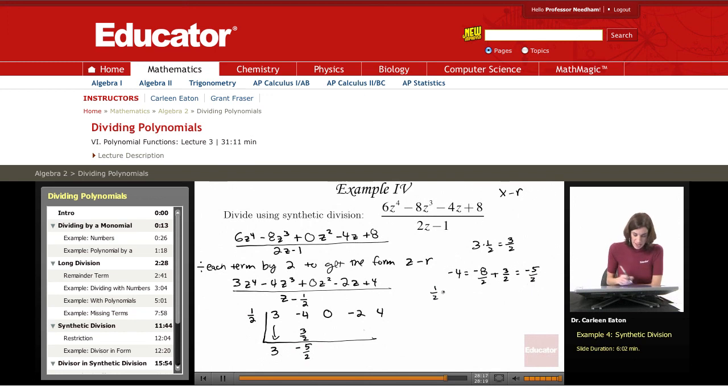Now multiplying 1 half by negative 5 halves is going to give me negative 5 fourths. 0 and negative 5 fourths is just negative 5 fourths. Now I have to multiply 1 half times negative 5 fourths, which gives me negative 5 eighths.